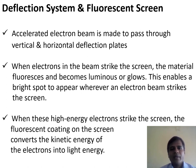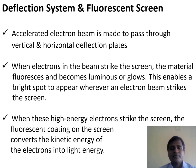The inner part of the fluorescent screen is coated with phosphor or zinc sulphide. When the electron beam strikes the screen, the material fluoresces and becomes luminous or glows, enabling a bright spot to appear wherever the electron beam strikes. The accelerated electrons carry kinetic energy due to their mass and velocity, and when these high-energy electrons strike the screen, the fluorescent coating converts their kinetic energy into light energy, producing a bright spot. This is how the CRO converts the electrical input signal into a visual signal.